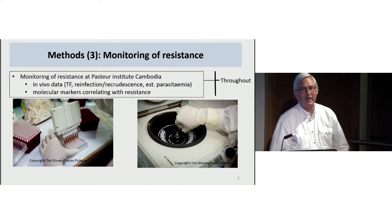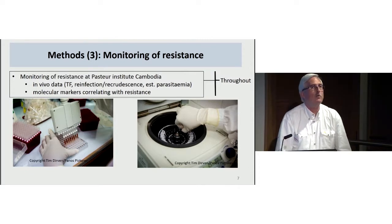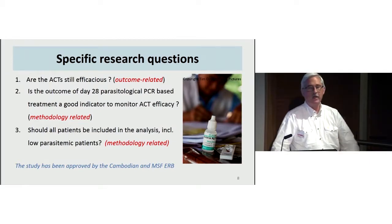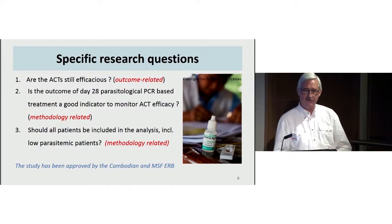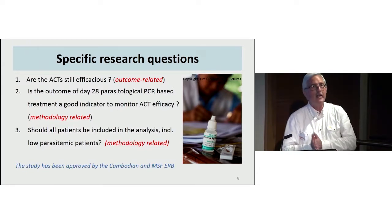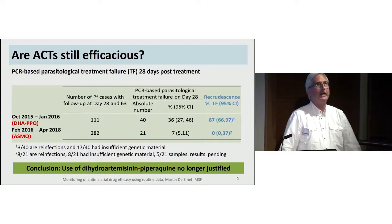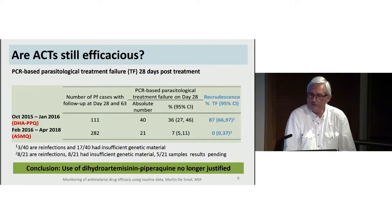The Pasteur Institute laboratory calculates estimated parasitemia based on PCR, distinguishes treatment failures from reinfection and recrudescence, and tracks molecular markers correlating with artemisinin, mefloquine, and piperaquine resistance. The three specific methodological questions are: first, are our ACTs still efficacious? Second, is day 28 a good choice for evaluation? Third, should we include all patients in the analysis? We measure this using PCR-based parasitological treatment failure at day 28.